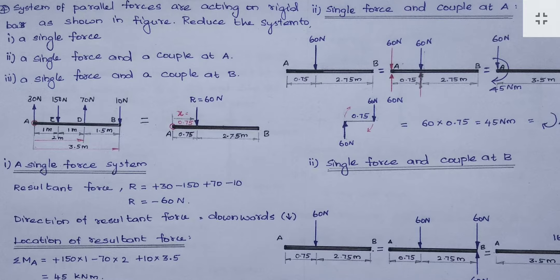Reducing the system into a single force means they are asking us to find the resultant. A number of forces acting on a body can be converted into a single force — that single force is the resultant force. To find the resultant of this force system, we add all forces. All forces are parallel — there is no horizontal force, only parallel forces.